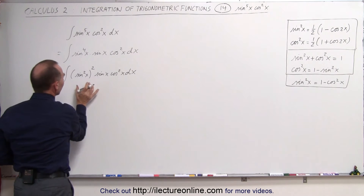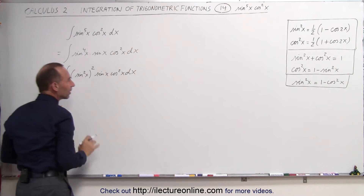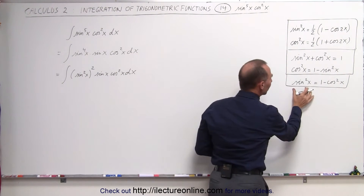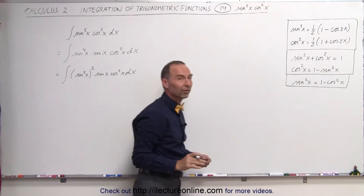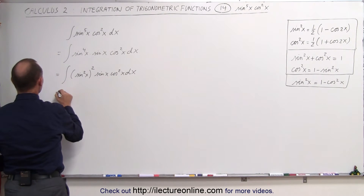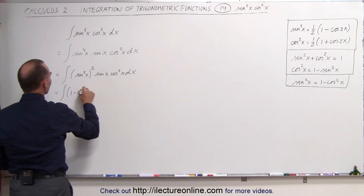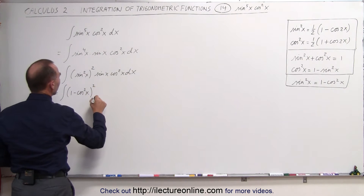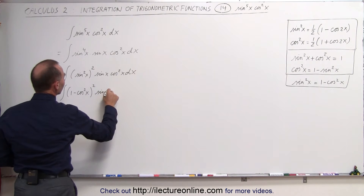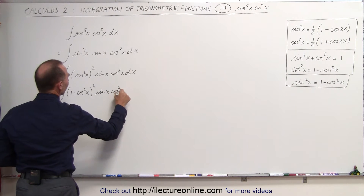The reason we did this is because we want to take the sine squared of x and replace it by 1 minus the cosine squared of x. When we do that, we get the integral of 1 minus the cosine squared of x, quantity squared, times sine of x times cosine squared of x dx.